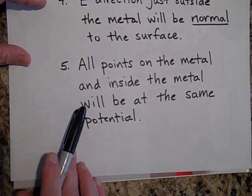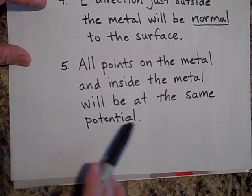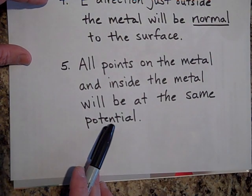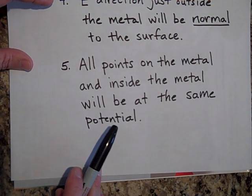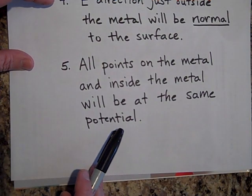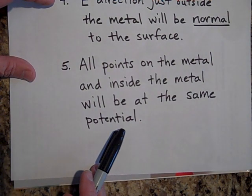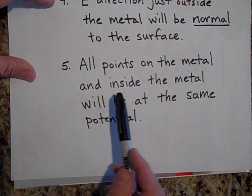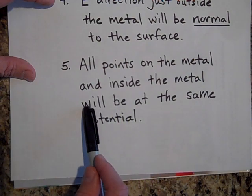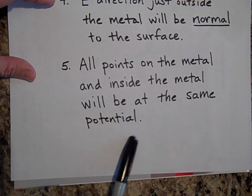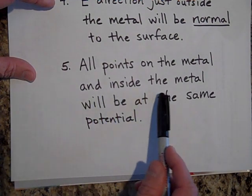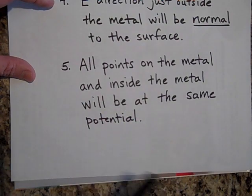Number five: all points on the metal and inside the metal will be at the same potential. That's related to number one. Positive charges flow from higher potential to lower potential, so if one part of the metal is at a high potential and another part at a low potential, charges will flow. If it's in equilibrium, the potential at any point must be the same as any other point in the metal; otherwise charges would flow.